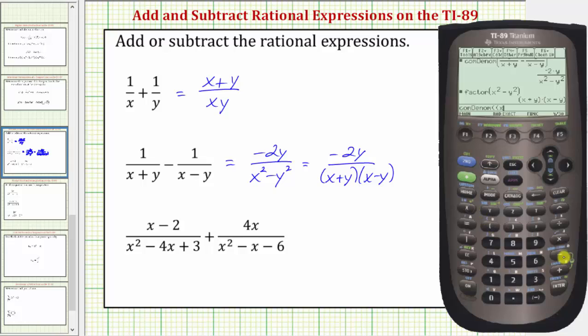open parenthesis x minus two, close parenthesis, divided by open parenthesis x squared minus four x plus three, close parenthesis, and then plus open parenthesis